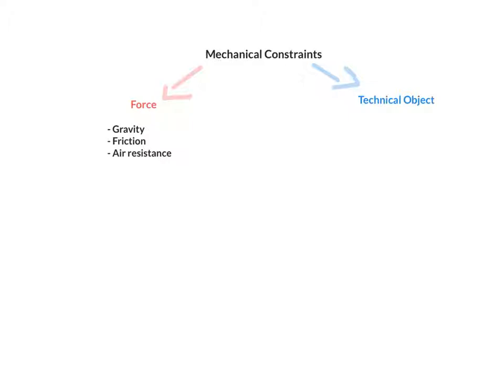So all of these three are examples of what a force is, which is really a push or a pull on an object which causes it to move. Now a technical object is pretty broad because it's any object that is made by humans to meet a specific need.